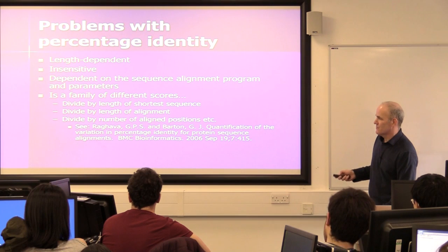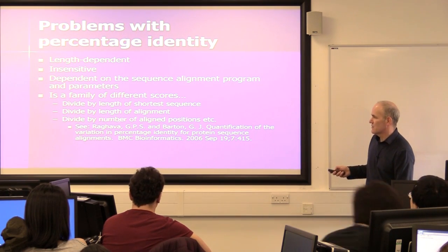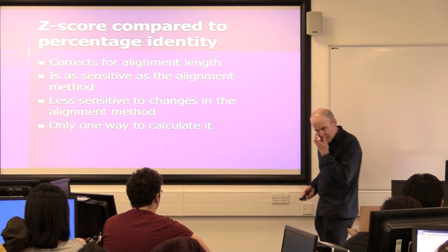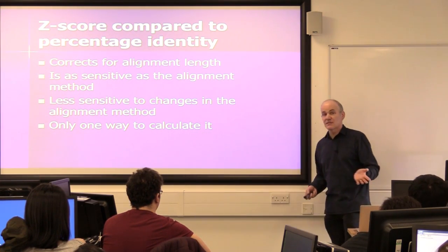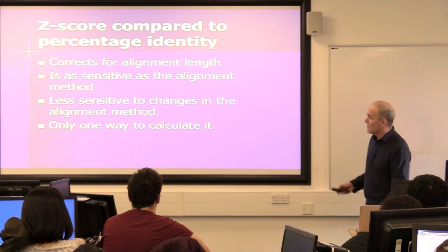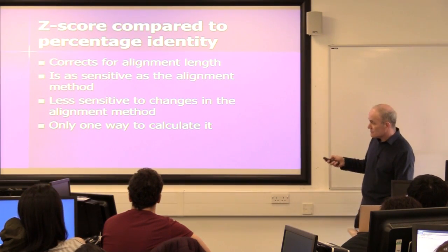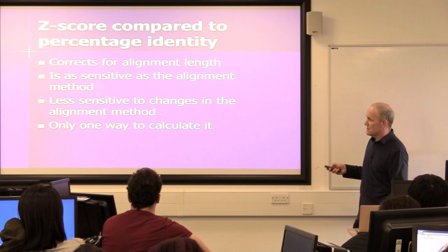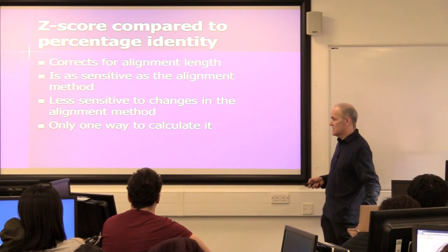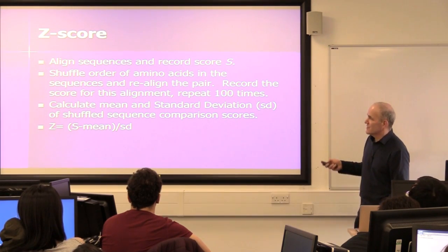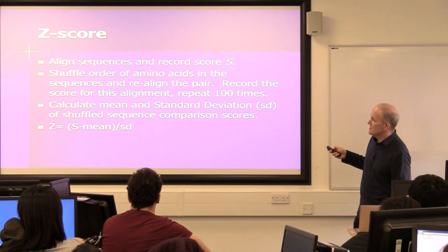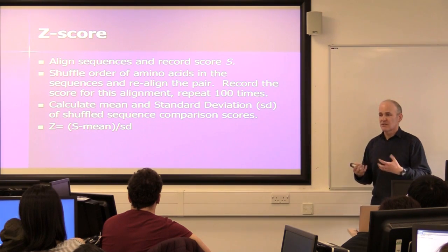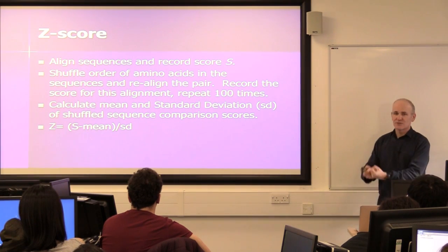A better measure — unfortunately not something you can easily use in the programs today — is to calculate a z-score. This corrects for alignment length, it's as sensitive as the alignment method, and it's less sensitive to changes in the alignment method; there's only one way to calculate it. What you do to get a z-score is align the sequences and record a score, then shuffle the order of the amino acids in the sequences, realign them, get another score, and do that 100 times.